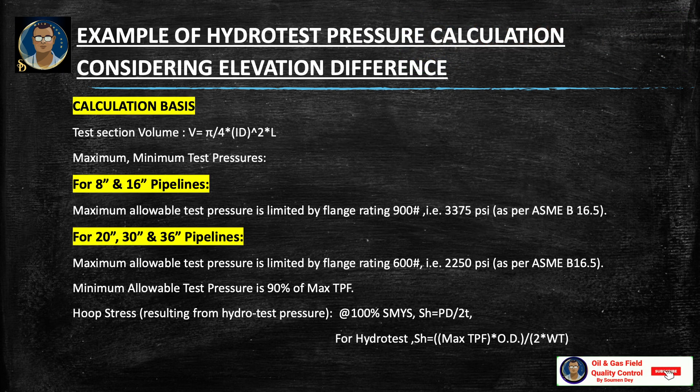Let us take an example of how to calculate pipeline hydro test pressure considering elevation differences. The test section volume formula is V = (pi / 4) × D² × L, as discussed earlier. For 8-inch and 16-inch pipeline, the maximum allowable test pressure is limited by 900-pound flange — 3,375 psi as per ASME B16.5. For 20-inch, 30-inch, and 36-inch pipeline, the maximum allowable test pressure is limited by 600-pound rating — 2,250 psi as per ASME B16.5.